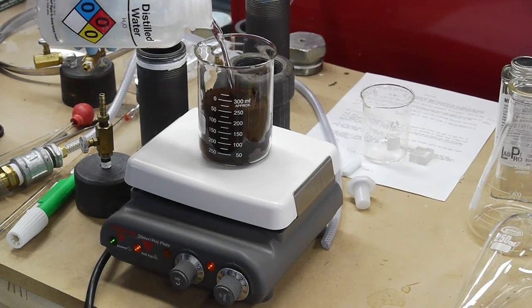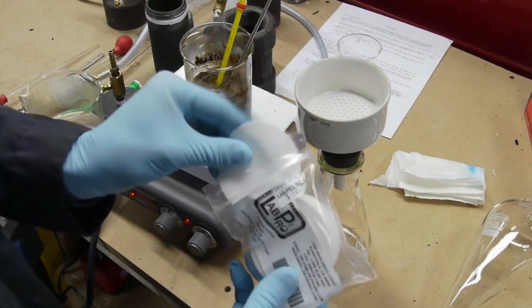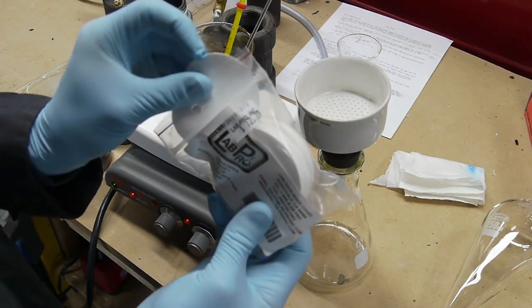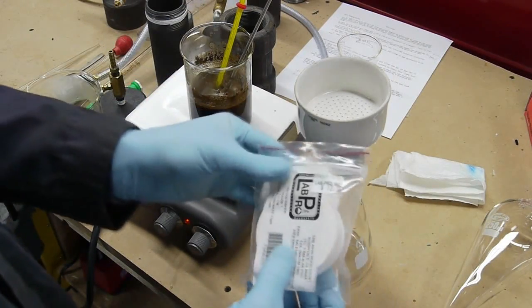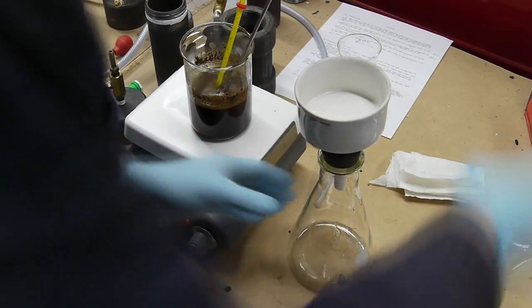And I loaded the coffee into a vacuum filtration setup and I used 11 micron filter paper and sprayed a little bit of water down first just to keep the filter paper pulled down onto the Buchner funnel and applied vacuum.